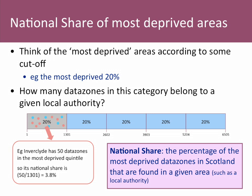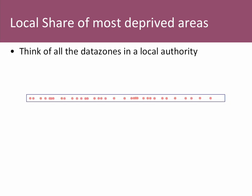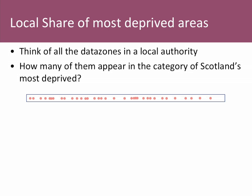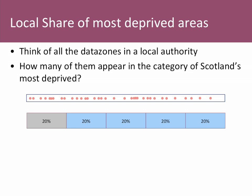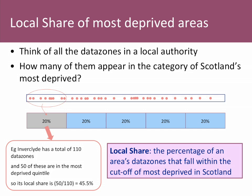The other way of looking at this is the local share, which measures how much of the local authority as a whole falls into the most deprived group. For Inverclyde, there are 110 data zones in total, 50 of which are in the most deprived 20% of Scotland, giving a local share of 45%.